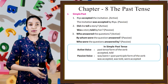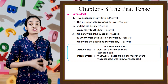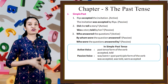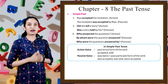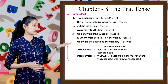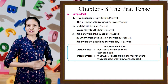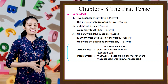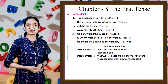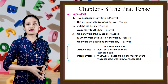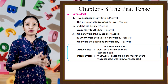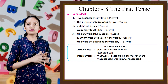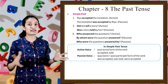Next is simple past tense. 'Leah accepted the invitation' (active) — 'The invitation was accepted by Leah' (passive). 'Did she tell a story?' (active) — 'Was a story told by her?' (passive). 'Who answered the questions?' (active) — 'By whom were the questions answered?' (passive), or 'Who were the questions answered by?' (passive).